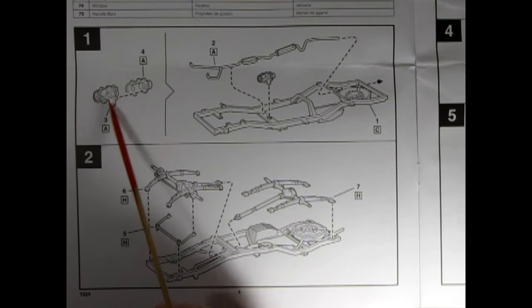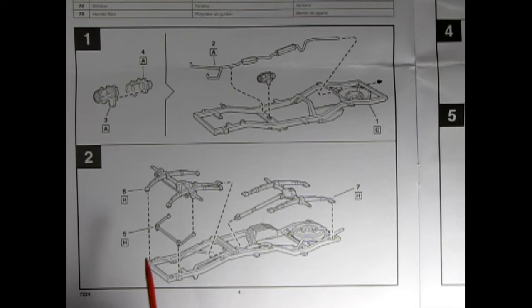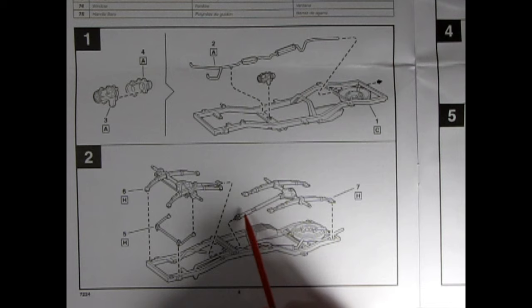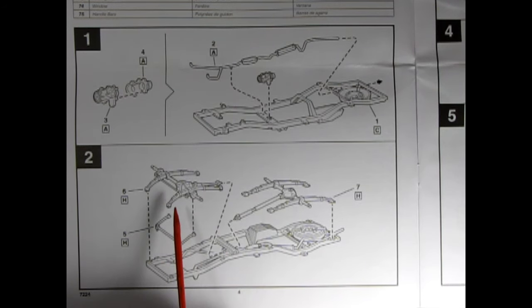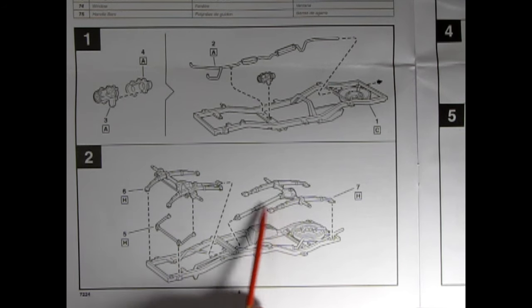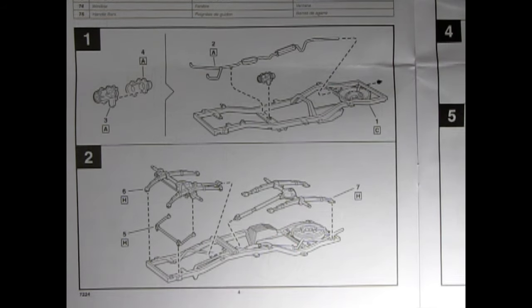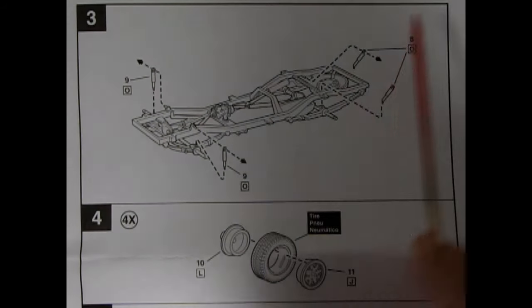On this side of the instruction sheet, Revell gives you the part name and the number in which it corresponds to, so you can check to make sure you have all your components. Now we'll get into our assembly steps, and we start off with the transfer case of our transmission, which glues right into here on the frame, and then our exhaust will slip up underneath. In panel two, we have our front and rear suspension, and as you can see, this is a four-wheel drive.